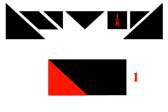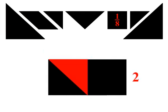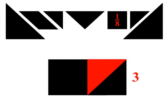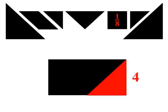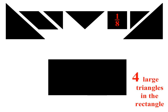Now let's look at the large triangle. Counting how many large triangles cover the rectangle: 1, 2, 3, 4. There are 4 large triangles in this rectangle, so the large triangle is 1 fourth the rectangle.